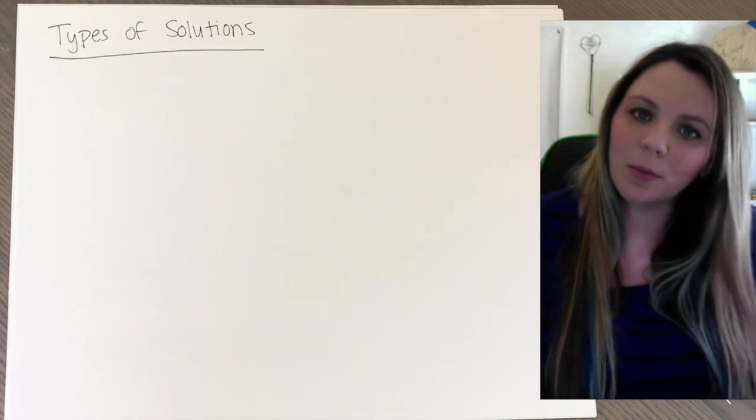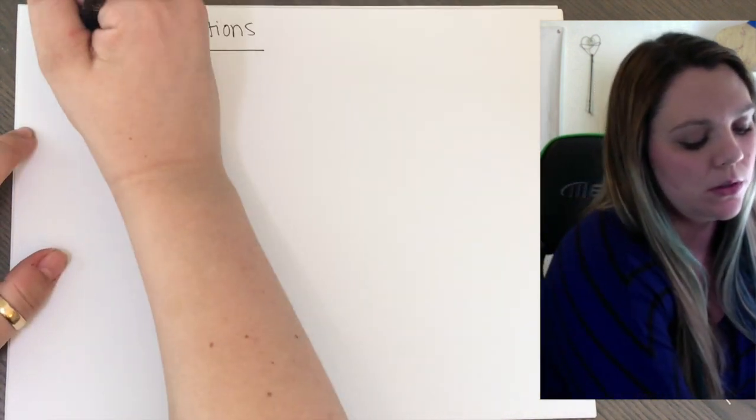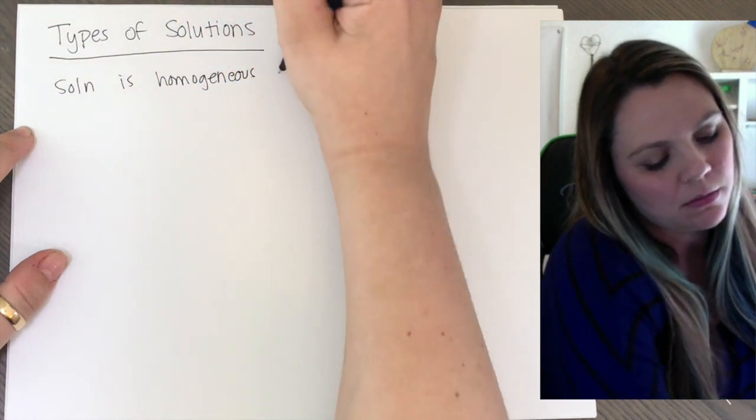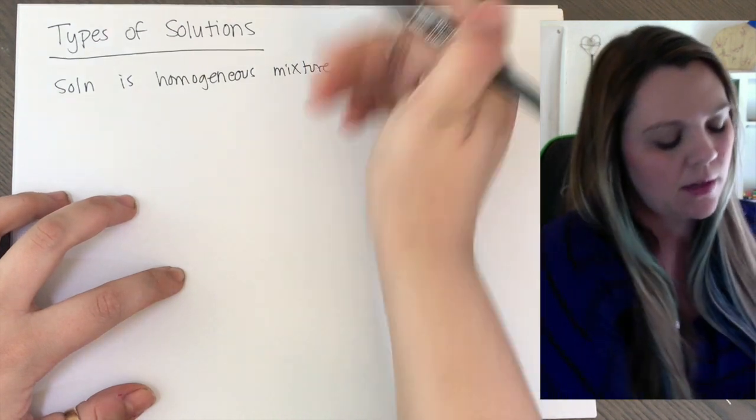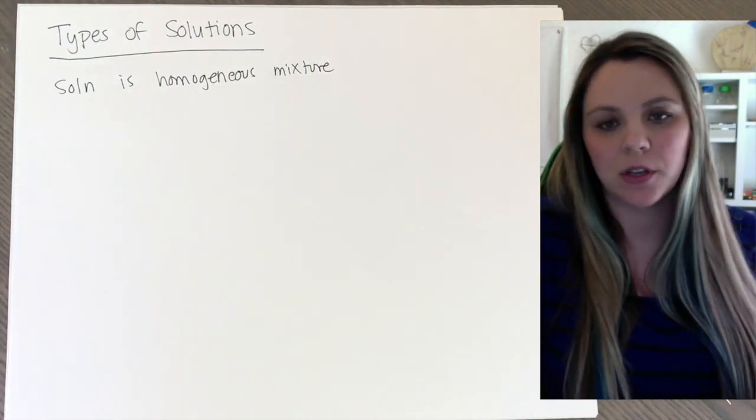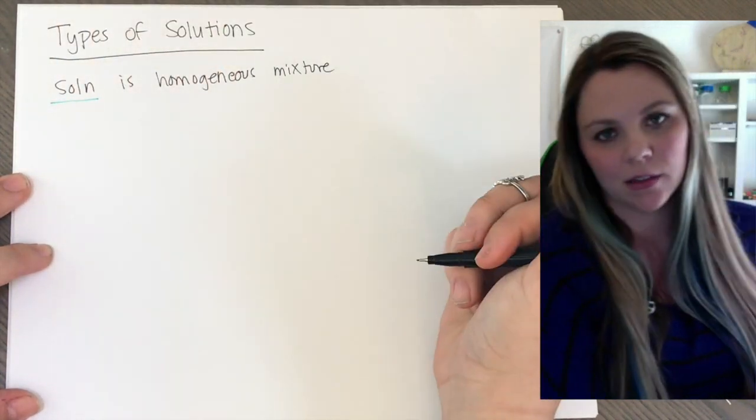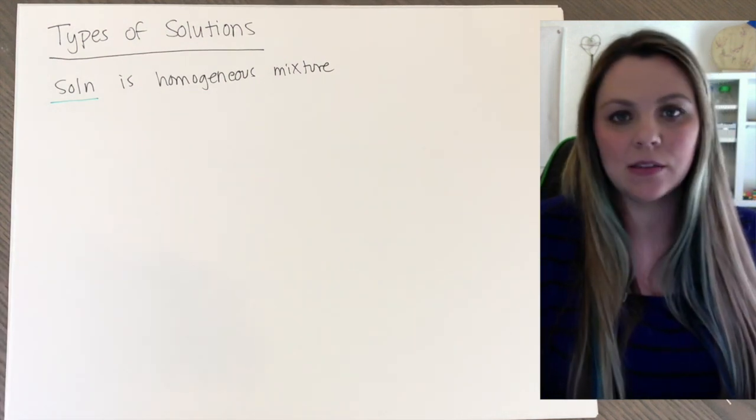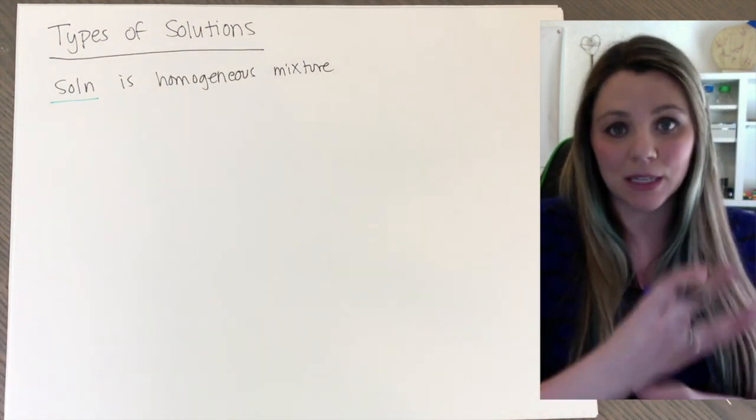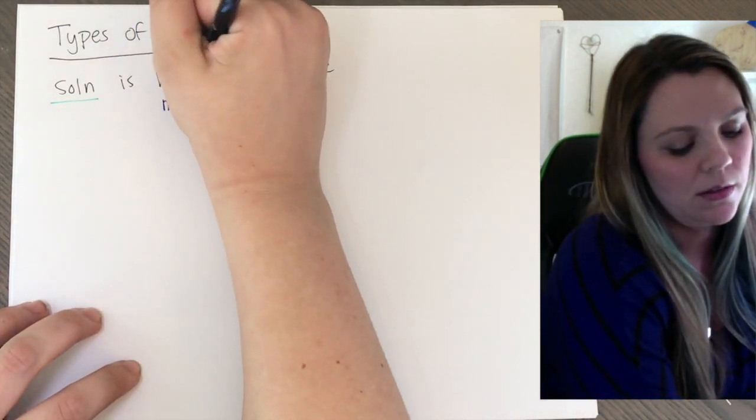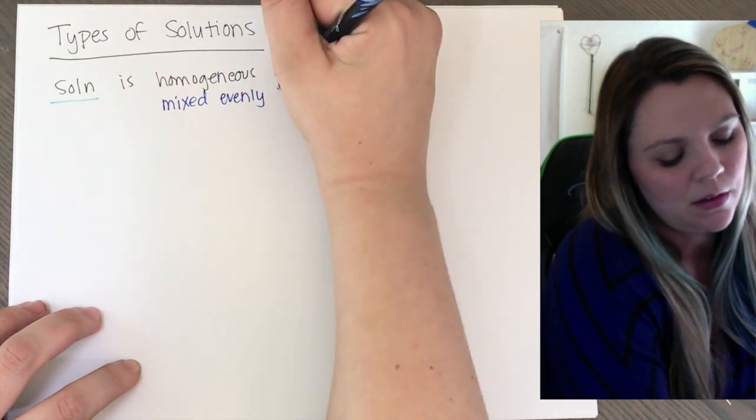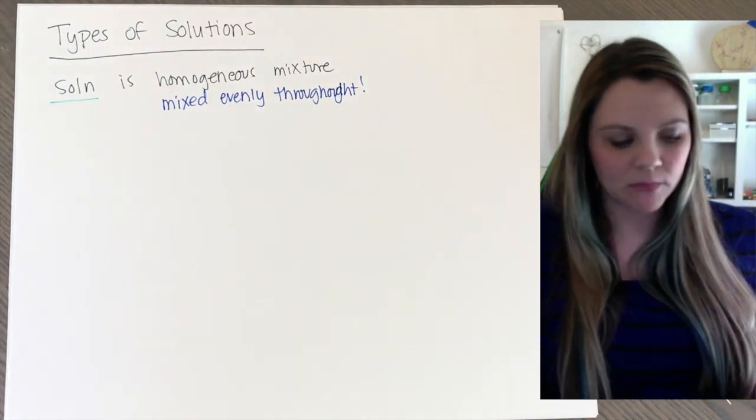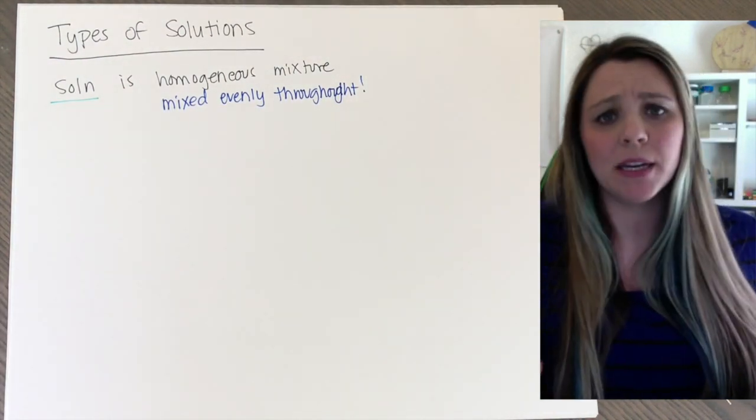First is a nice little review from way back at the beginning of the year. A solution is a homogeneous mix. Of course, it's chemistry, so we abbreviate everything - S-O-L-N, solution. Homogeneous means it's mixed the same throughout, mixed evenly throughout.